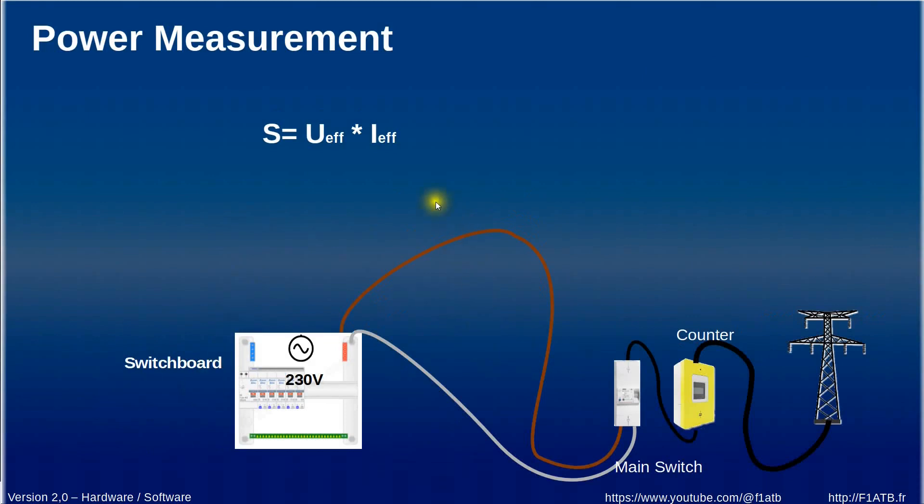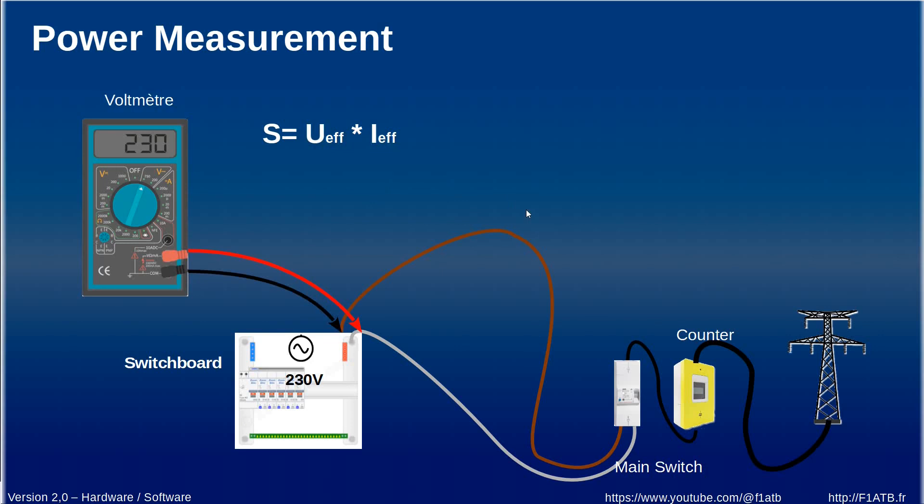Now I propose to address the power measurement. Electrical power corresponds to the voltage multiplied by the current. Imagine we have a voltmeter connected to the switchboard of the house which displays a voltage of 230 volts.